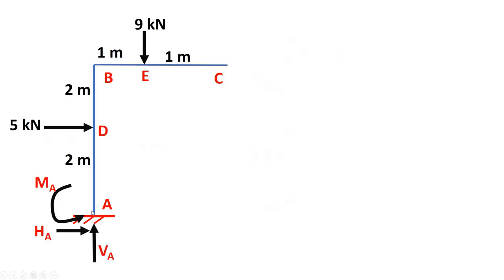First of all, how many reactions do we have? For this fixed support we have three reactions: vertical, horizontal, and moment. This support at C is free, so at the free end we don't have any reaction. Let us determine reactions first.